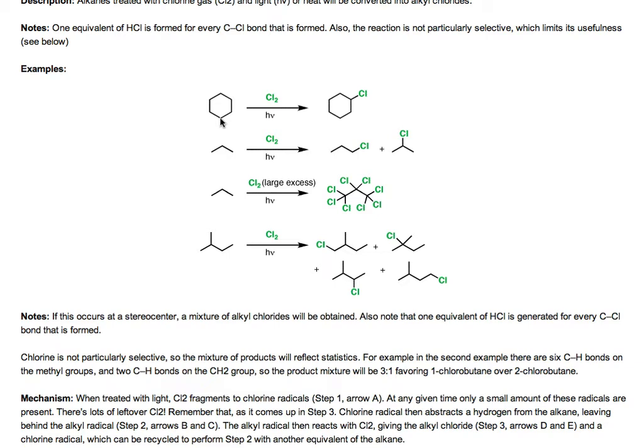So when we do this reaction, we end up with chlorocyclohexane along with one equivalent of HCl gas. That is a very simple reaction of chlorine with light.